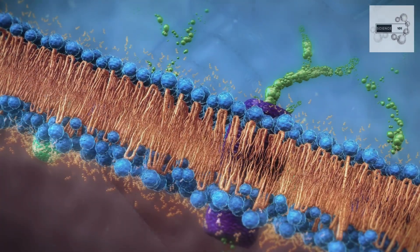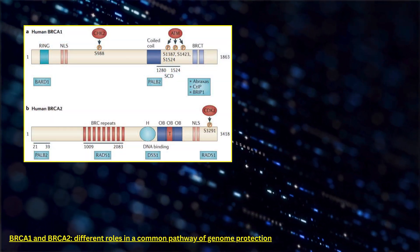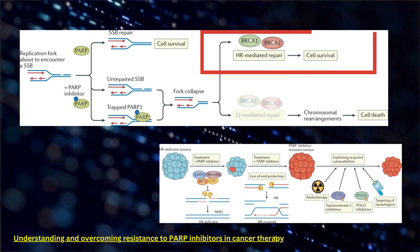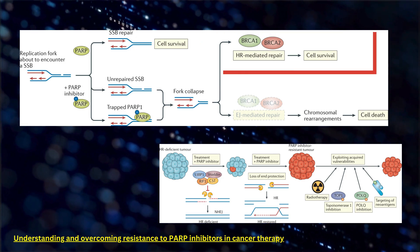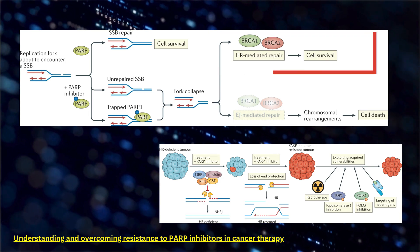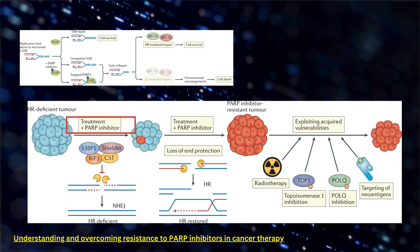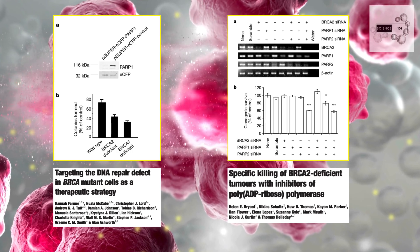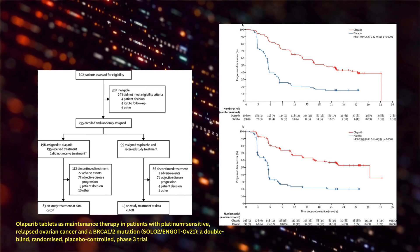A landmark example of synthetic lethality in action involves the BRCA pathway, a critical DNA repair mechanism. Mutations in BRCA1 or BRCA2 genes render cancer cells highly reliant on a secondary repair pathway mediated by an enzyme called PARP. This creates an exploitable vulnerability. PARP inhibitors, precisely designed to target this secondary pathway, leave BRCA-mutant cancer cells with no effective repair mechanism, leading to their demise.